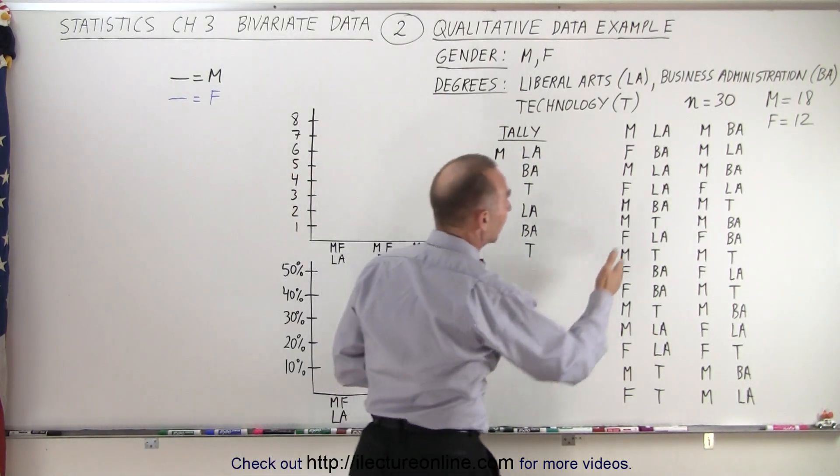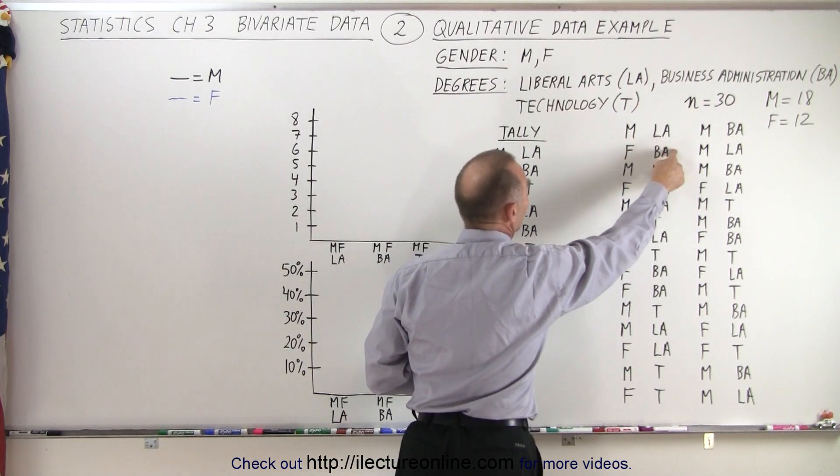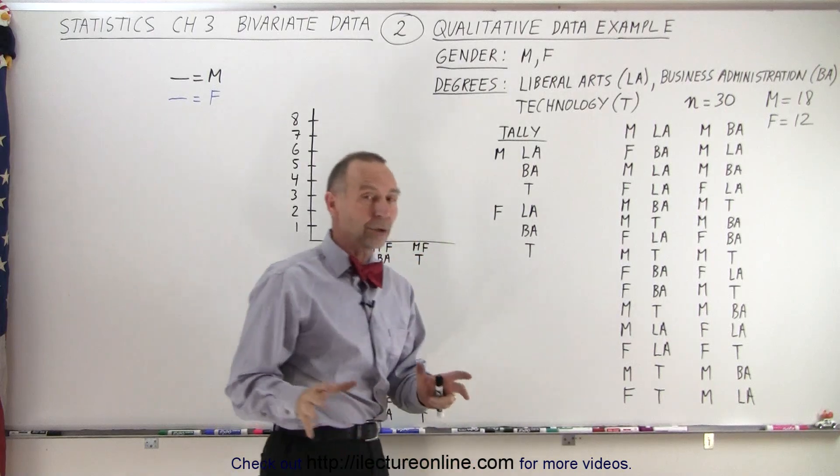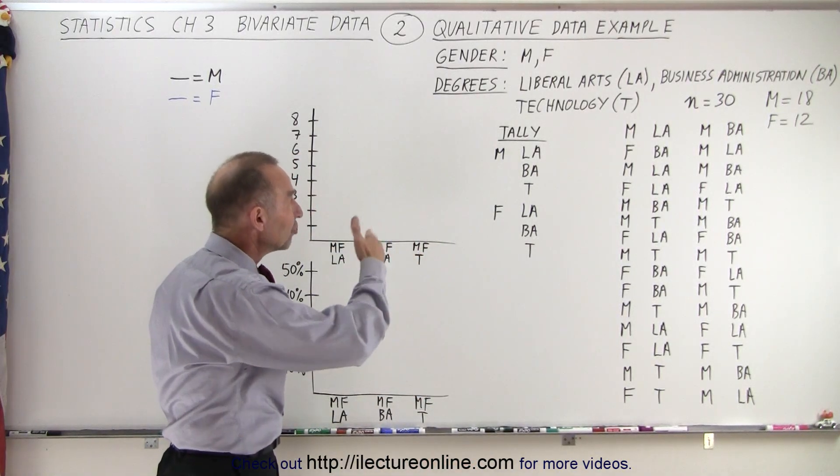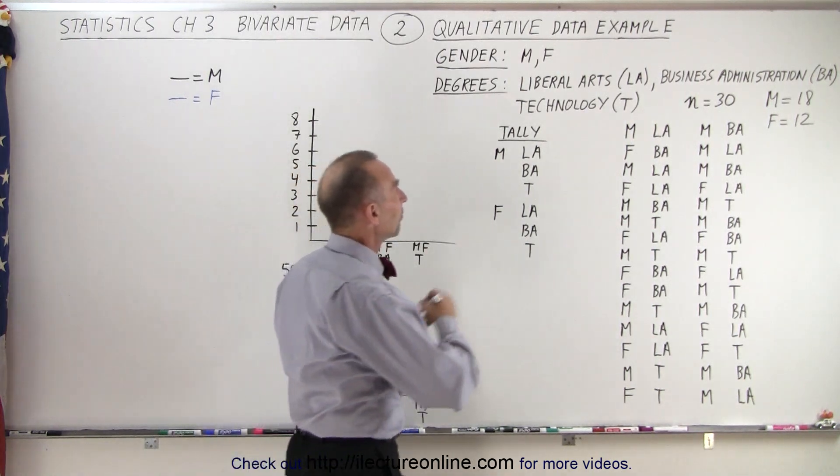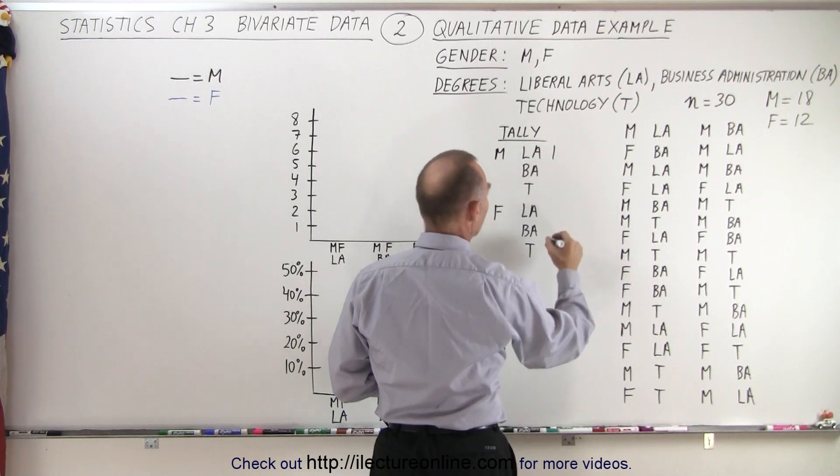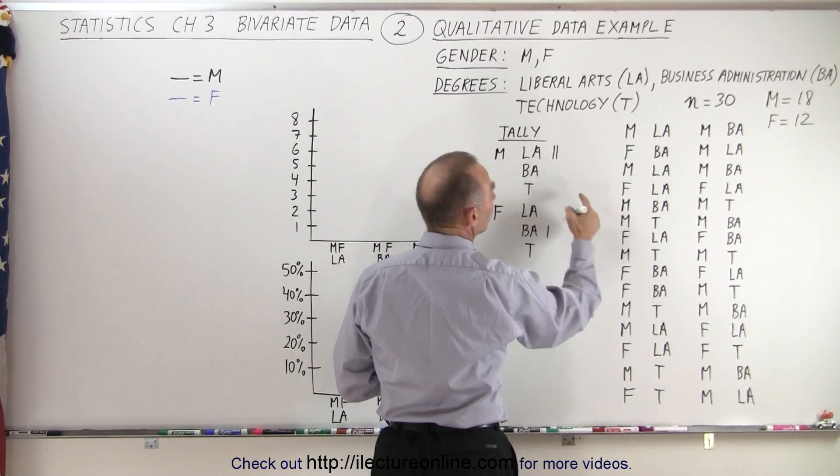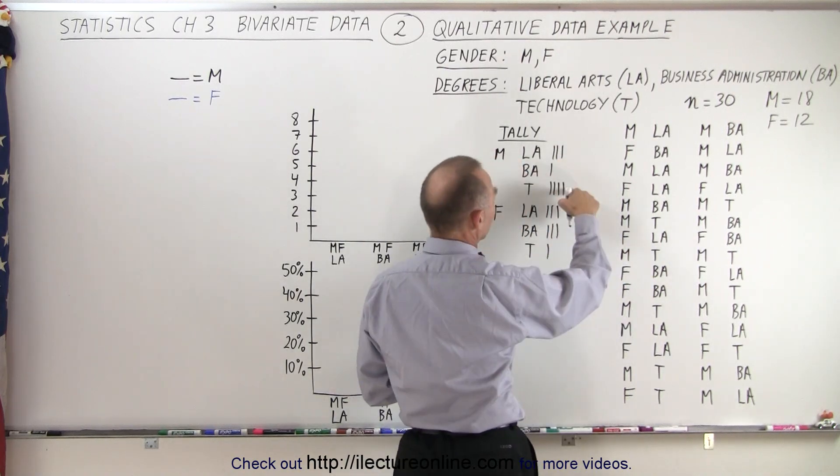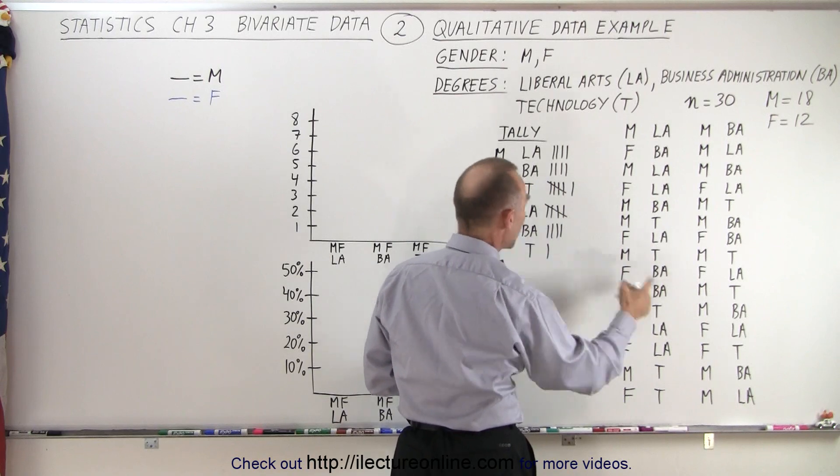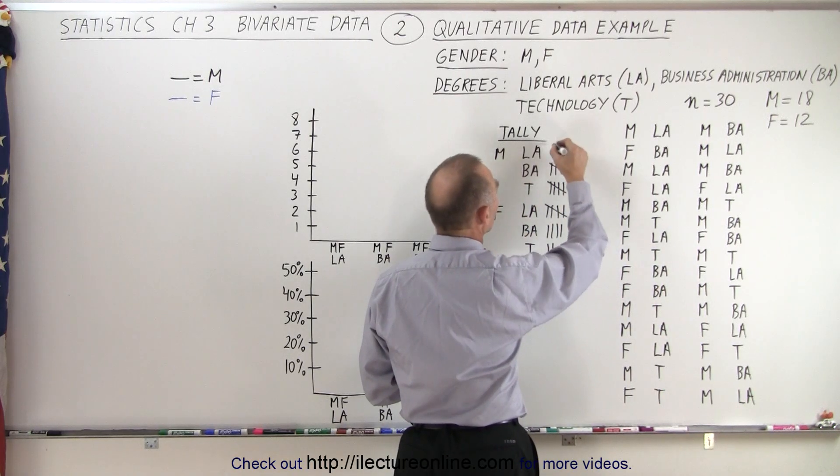Notice that they are listed as either having a Liberal Arts degree, a Business Administration degree, or a Technology degree. Now we're going to use the method of tallies to find out how many of each for each type of student, male or female. So we have male Liberal Arts, Female Business Administration, Male Liberal Arts, and Male Liberal Arts. There we go.